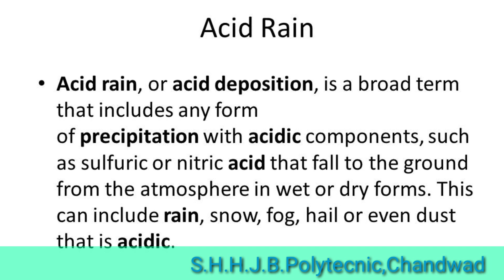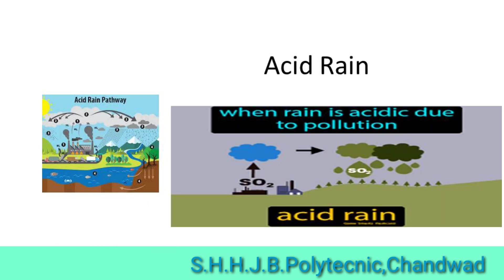The fourth environmental issue is acid rain. Acid rain, or acid deposition, is a broad term that includes any form of precipitation with acidic components such as sulfuric acid or nitric acid that fall to the ground from the atmosphere in wet or dry forms. This can include rain, snow, fog, hail, or even dust that is acidic.